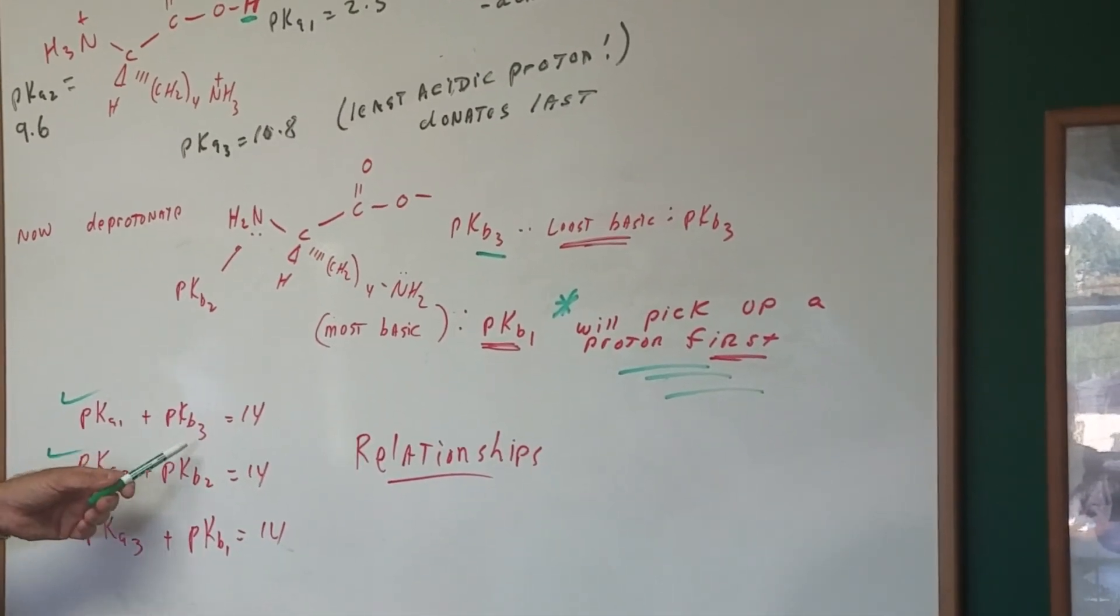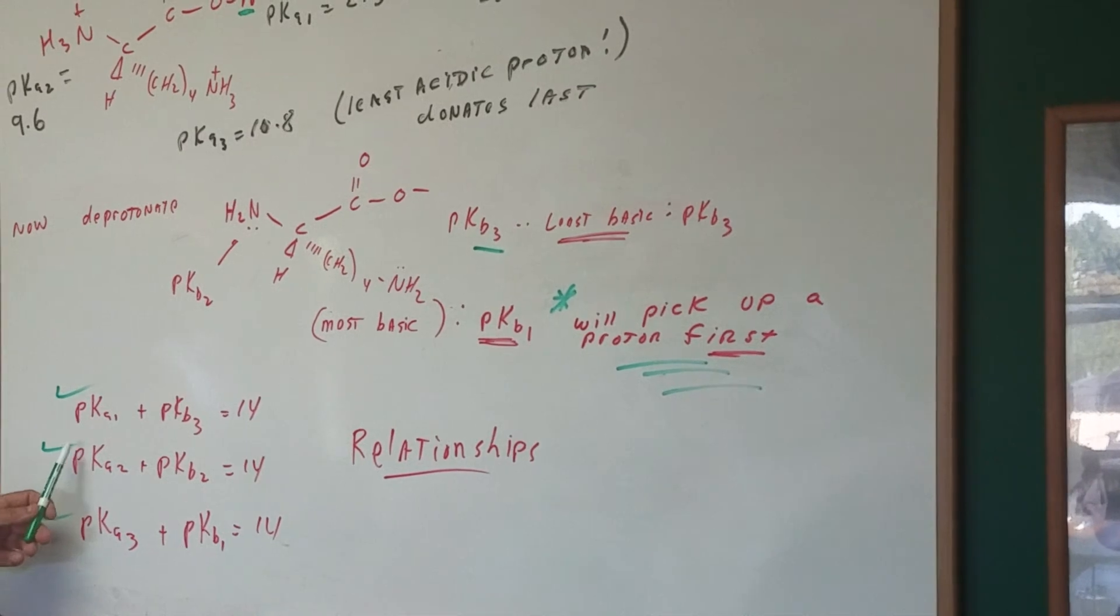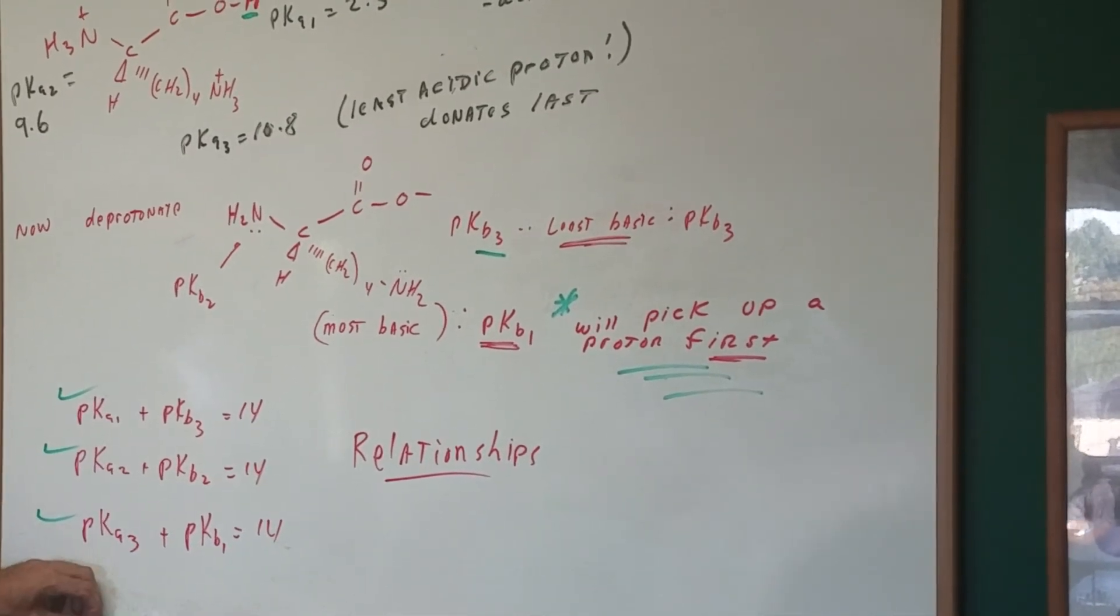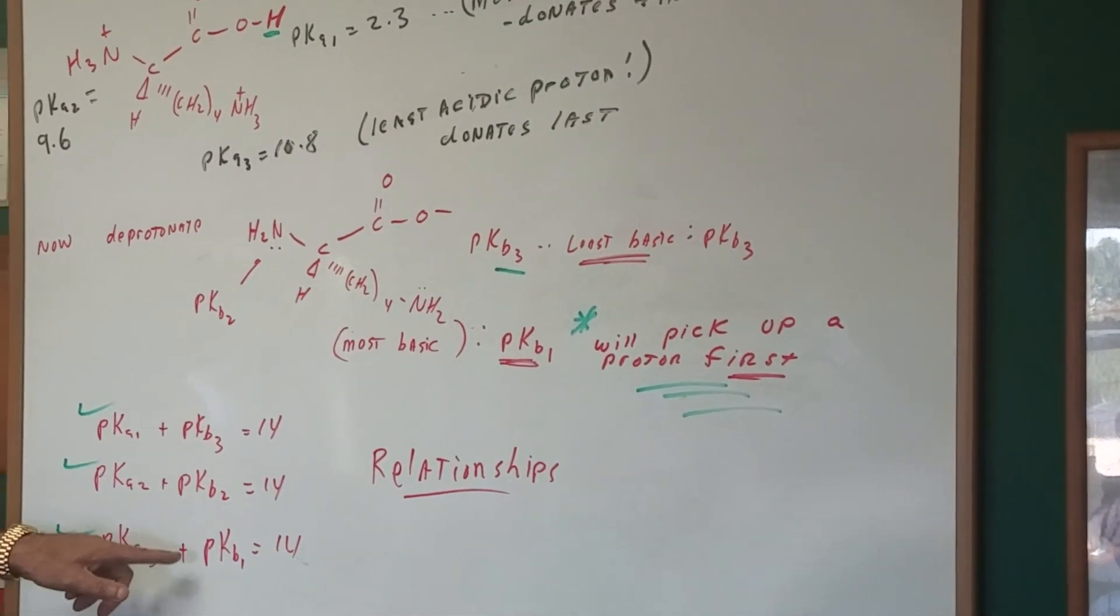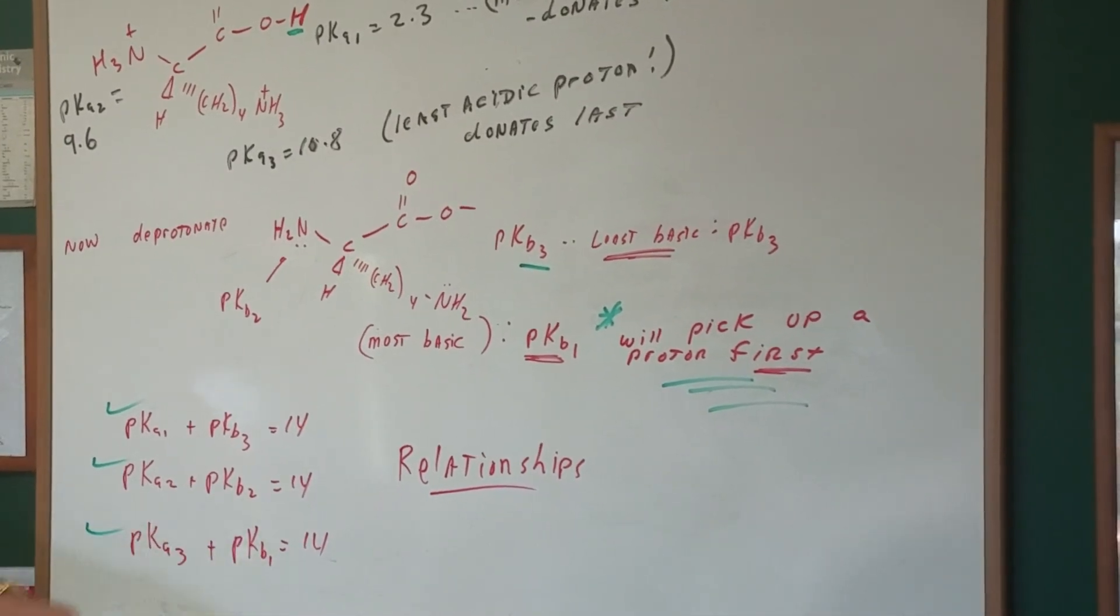PKA1 plus PKB3 equals 14. PKA2 plus PKB2 equals 14. And PKA3 plus PKB1 equals 14.